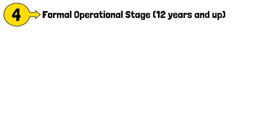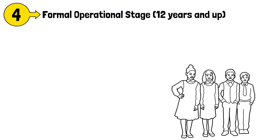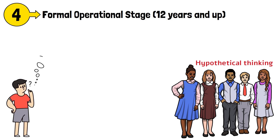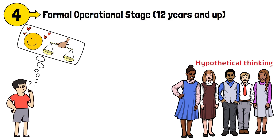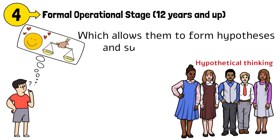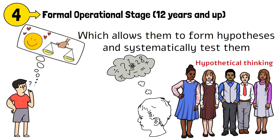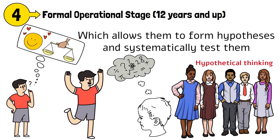Stage 4: the Formal operational stage, from twelve years and up. The final stage involves the development of abstract and hypothetical thinking. Adolescents in this stage can think about abstract concepts such as justice or love, and are capable of deductive reasoning, which allows them to form hypotheses and systematically test them. They also become able to think about multiple variables in complex problems, such as considering all possible outcomes of a situation before taking action.